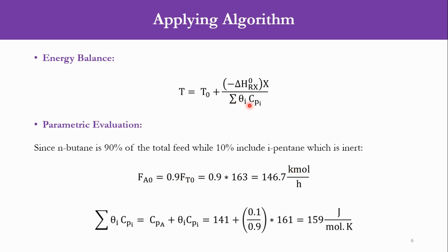Now we have to solve this summation theta i Cpi and that is equal to Cp of A plus theta i Cpi. Cp of A means that the limiting reactant will be considered as a separate quantity while the other components in the feed stream will be considered as the other quantity. So it will be Cp of A plus theta i. If you remember our definition of theta, it was the mole fraction of that species divided by the mole fraction of the limiting reactant. Accordingly, Cp of A is given as 141. Theta of i is 0.1 divided by 0.9 - 0.1 corresponds to isopentane and 0.9 corresponds to normal butane. And accordingly that Cp is 161 for the inert species. So the sum gives an answer of 159 joules per mole per Kelvin. So this parameter is solved.